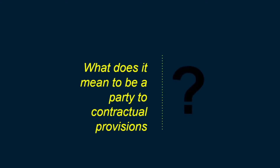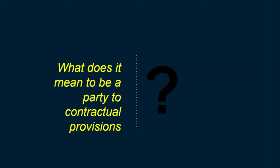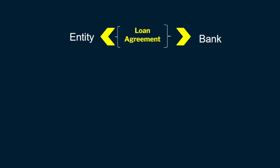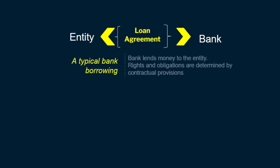What does it mean to really be a party to the contractual provisions? For example, if a bank lends a loan to an entity, it has a very specific agreement with the borrower, and according to that agreement, both parties have rights and obligations.